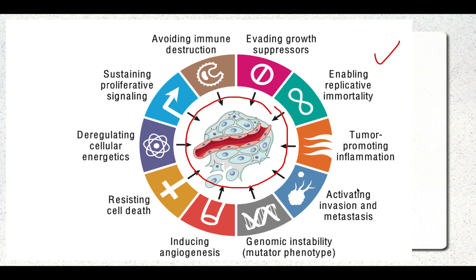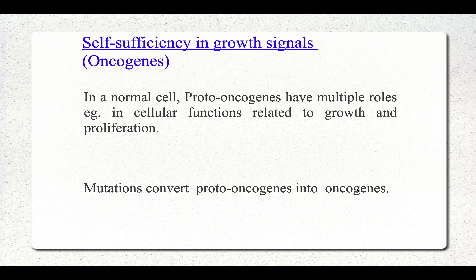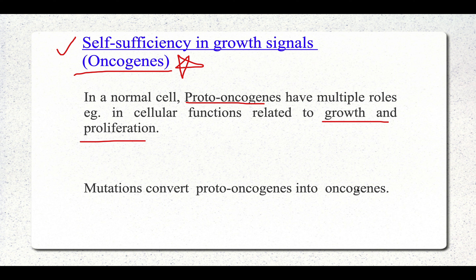The first alteration is self-sufficiency in growth signals, which involves the concept of oncogenes. In a normal cell, there are genes known as proto-oncogenes that lead to growth and proliferation, but they are only transiently active. When mutation occurs, proto-oncogenes are converted into oncogenes, which become constitutively active and lead to the further development of neoplasia.